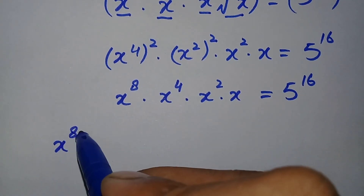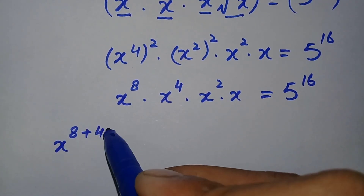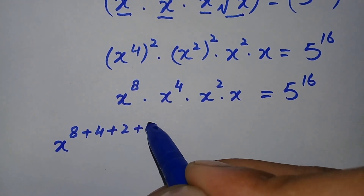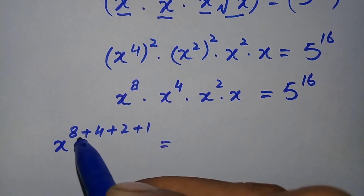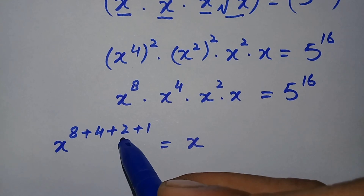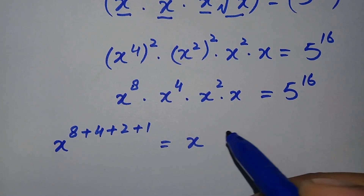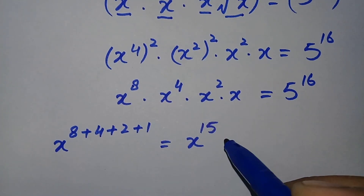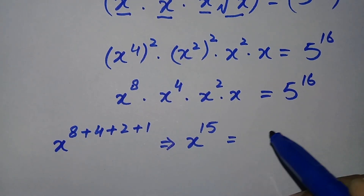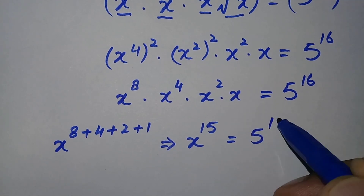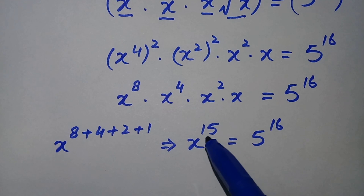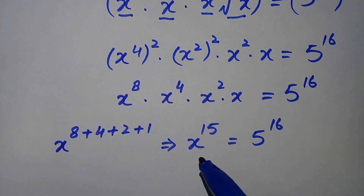Simplifying the powers: x raised to power 8 plus 4 plus 2 plus 1 — since the bases are the same we add the powers. 8 plus 4 is 12, 12 plus 2 is 14, 14 plus 1 is 15. So x raised to power 15 is equal to 5 raised to power 16. To find the value of x we will eliminate the 15 in the power of x.